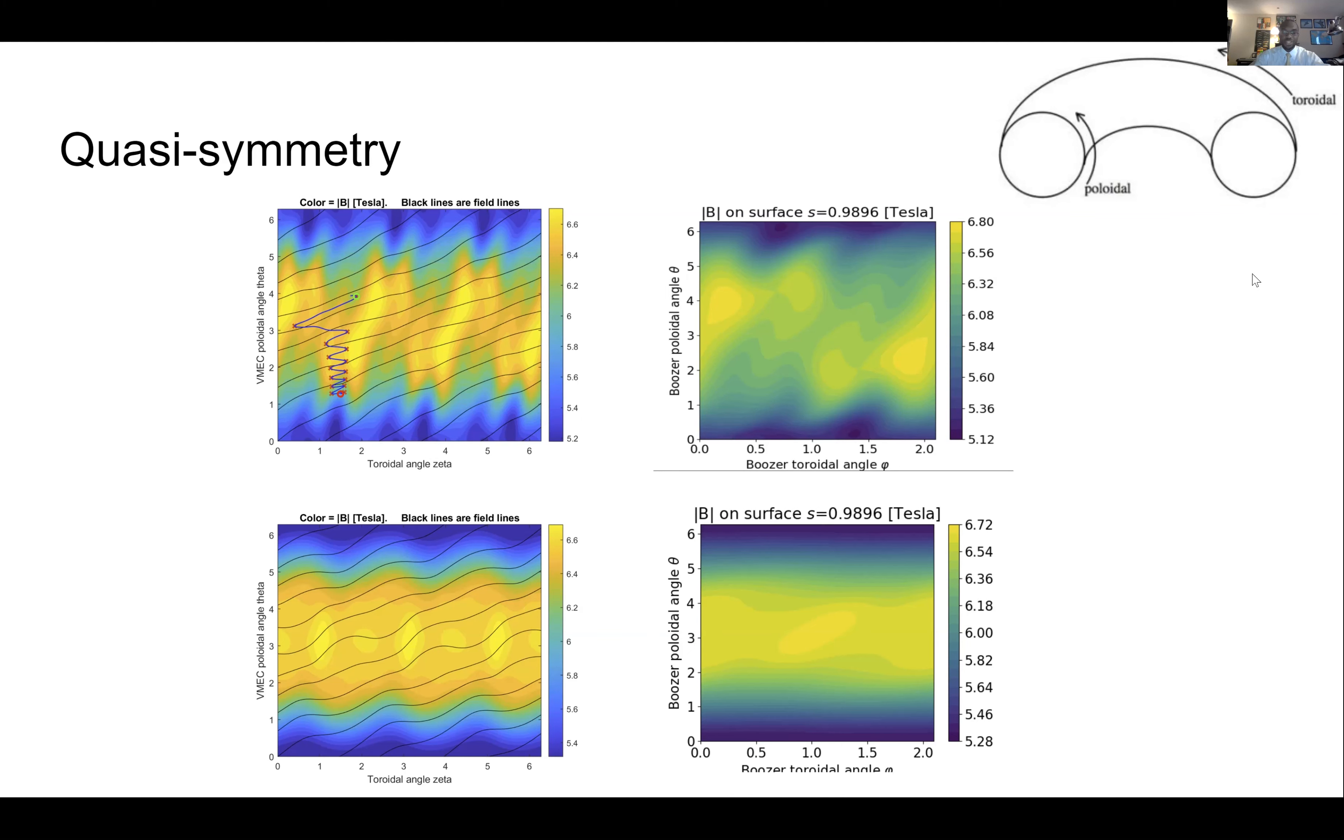Now, if we take these plots on the left and stretch them so that the field lines are straight, we get plots like on the right. This stretching of the field, you can basically think of it like taking our stellarator field and blowing it up like a balloon so that it actually becomes a torus.